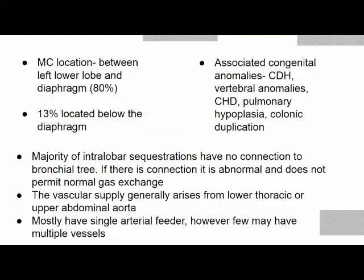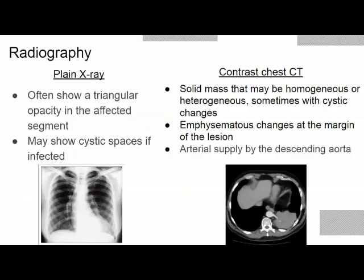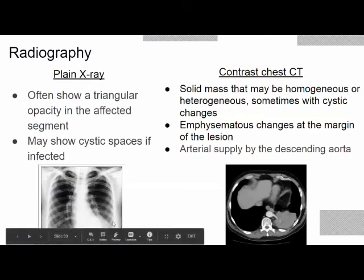The vascular supply generally arises from the lower thoracic or upper abdominal aorta. Most have a single arterial feeder, though some may have multiple vessels. About 75% are asymptomatic; 25% present with feeding difficulties, respiratory distress on feeding, recurrent pneumonia, congestive cardiac failure, or hyperdynamic circulation from the size of the lesion. Rarely, older children present with hemoptysis. In hybrid lesions, there are rare associations with fibrous mesothelioma and carcinoma.